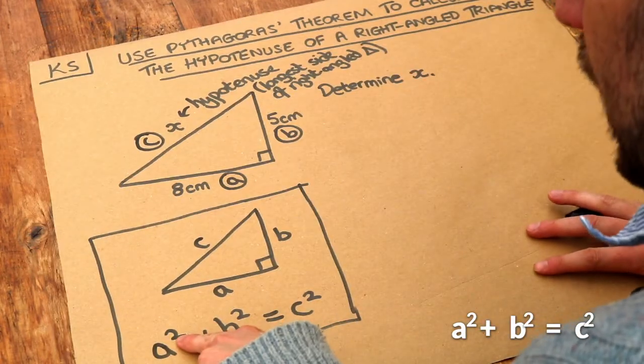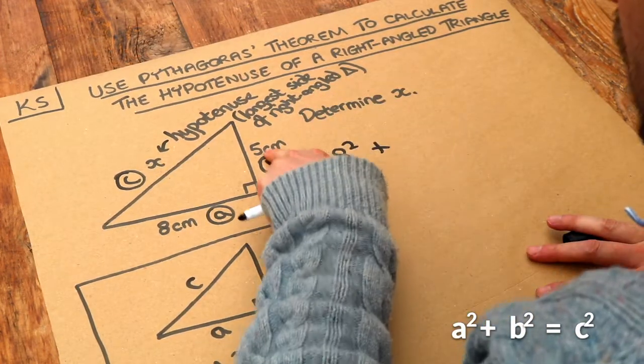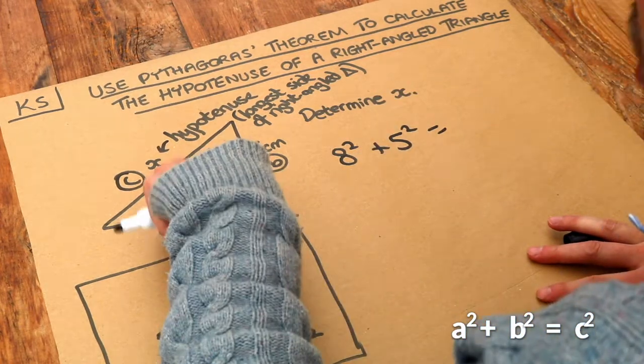So we've first got A squared, so 8 squared, plus B squared, 5 squared, is equal to C squared, which is X squared.